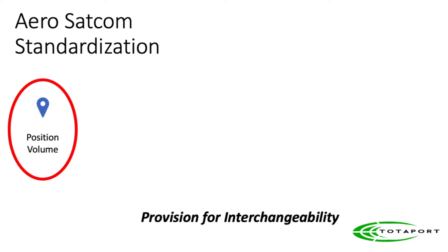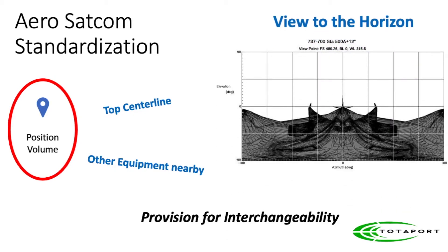Standardization involves different dimensions — for example, where to install the system. The equipment inside needs rack space, and that can be a problem because the racks are crowded. The SATCOM antenna is installed along the top center line, but we still encounter blockages such as winglets or the vertical stabilizer.